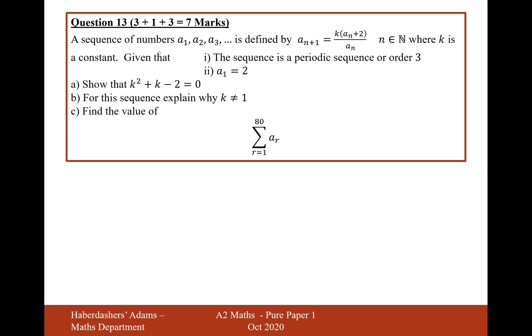A sequence of numbers a1, a2, a3, and so on, is defined by a(n+1) equals k times an plus 2 over an, where n is in the natural numbers and k is a constant. Given that the sequence is a periodic sequence of order 3 and that a1 equals 2, show that k² + k - 2 = 0.